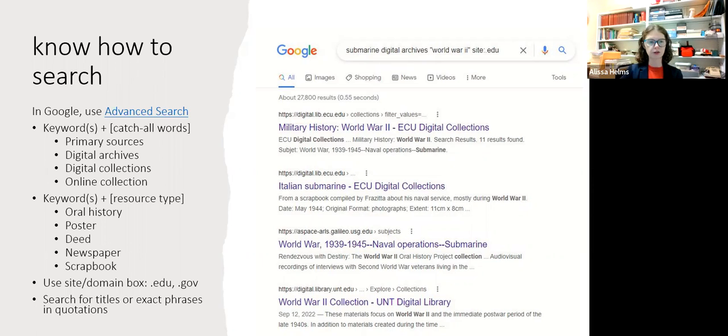You also may want to put in some catch-all words with your keywords. So in this example I'm looking for submarines and I put in digital archives. You could put in primary sources, digital collections, online collection, and your results should be some of these collections. And also in this example I've got World War II in quotation, so if there's a title or exact phrase that you want, put that in quotation. You may also want to put in a specific resource type so oral history or poster, newspaper, that kind of thing.